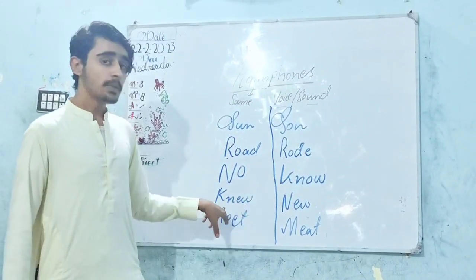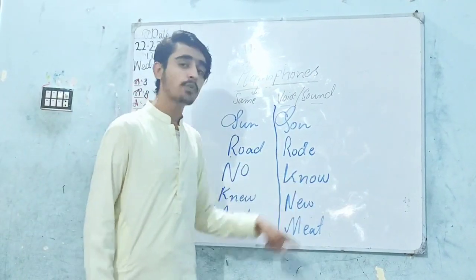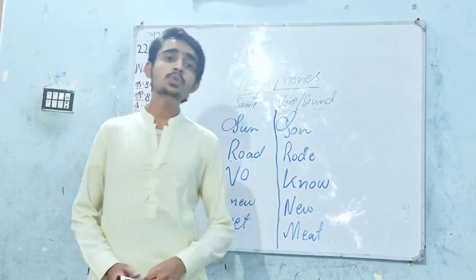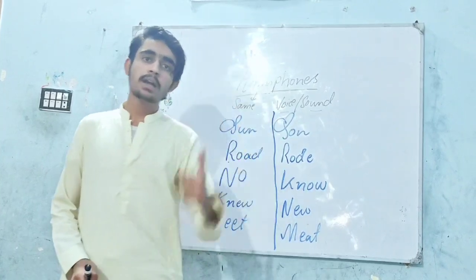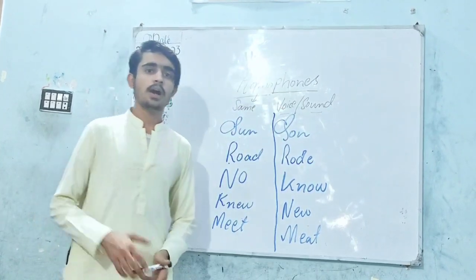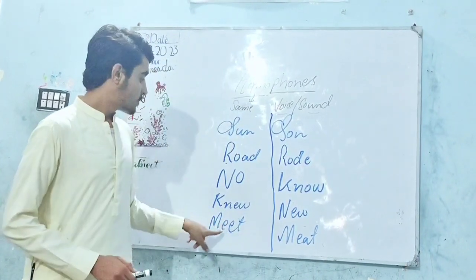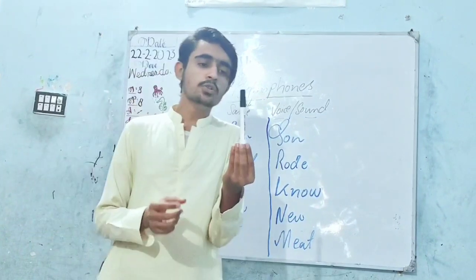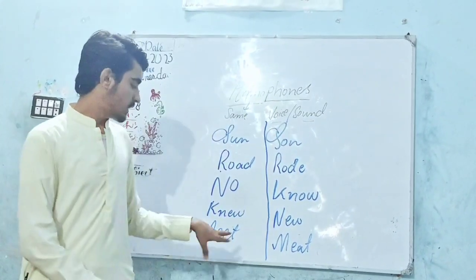Knew is the second form of know. For example: 'I knew the grammar but I don't know now' — used in past simple tense. And new means naya. For example: 'I bought a new marker' — here new means naya.